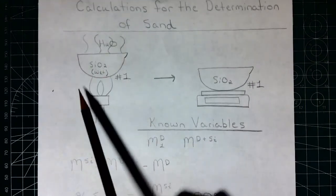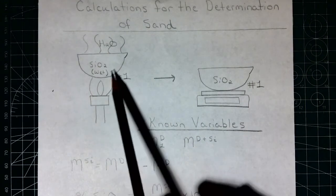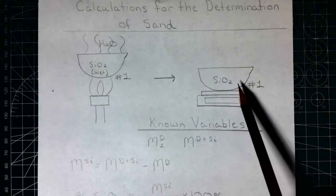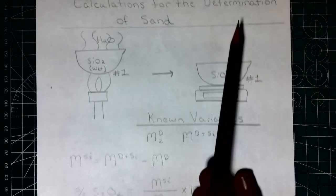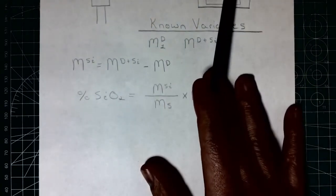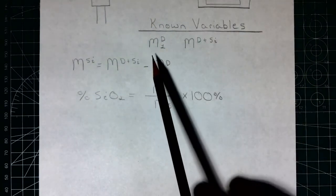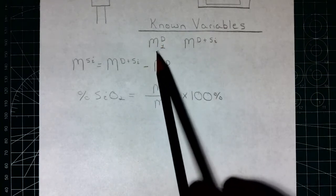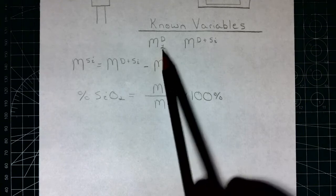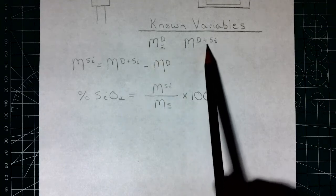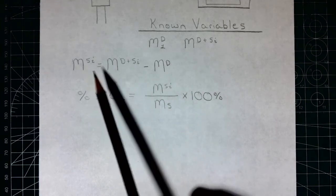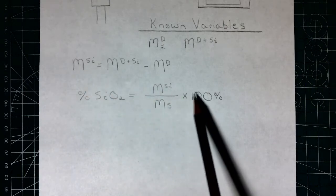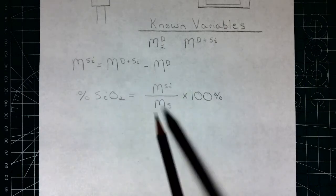The next section is titled Calculations for the Determination of Sand or Silicon Oxide. We're going to take this wet silicon oxide and just heat it to dry it off — driving off the water — and then mass it. We know the mass of dish one, which is the same value used in the first section. We know the mass of the dish and the sand; we subtract those to get the mass of the sand and then calculate our percent silicon oxide.